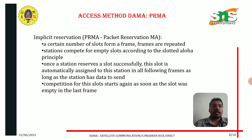The next access method is PRMA — Packet Reservation Multiple Access — which uses implicit reservation. In PRMA, a certain number of slots form a frame, and frames are repeated. Stations compete for empty slots according to the slotted ALOHA principle. Once a station receives a slot successfully, this slot is automatically assigned to that station in all following frames as long as the station has data to send. Competition for this slot starts again as soon as the slot was empty in the last frame.